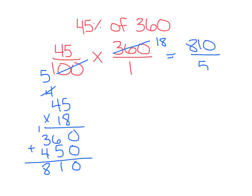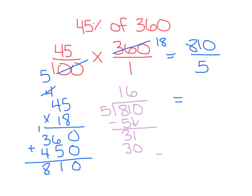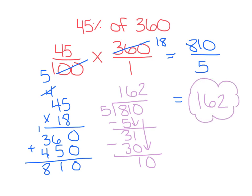Then 5 times 1 is 5. We want to simplify, so we have to do 810 divided by 5. 5 goes into 8 one time; subtract and you get 3. Bring down the 1 — 5 goes into 31 six times, which is 30. Subtract and you get 1. Bring down the last 0 — 5 goes into 10 two times. So 810 divided by 5 equals 162. 45% of 360 is 162.